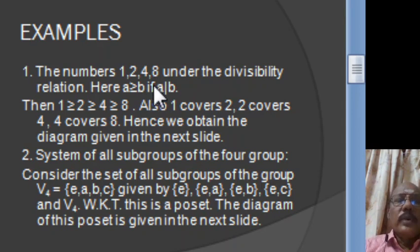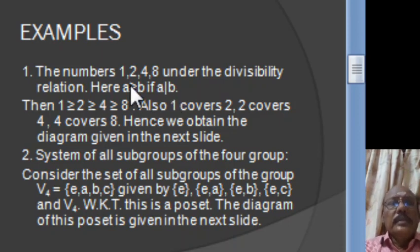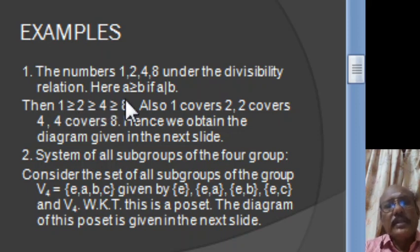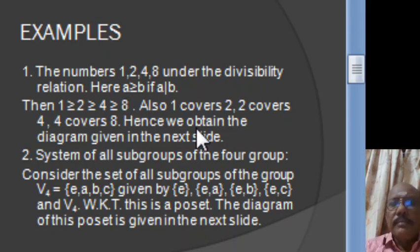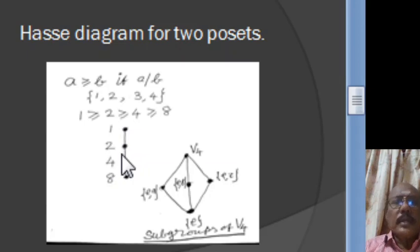For example, consider the numbers 1 to 48 with the divisibility relation. We define A ≥ B if A divides B. With respect to this relation, 1 ≥ 2 ≥ 4 ≥ 8. Also, 1 covers 2, 2 covers 4, and 4 covers 8. This partially ordered set can be conveniently represented by the Hasse diagram, where 4 is a cover for 8, 2 is a cover for 4, and 1 is a cover for 2.